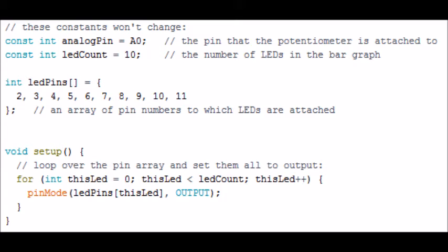And then we are starting a void setup. What we need to do is we're going to loop over the pin array and set them all to outputs. So what we're doing is, in this first line of code, it says for int thisLed equals 0. We have just declared a new variable int thisLed. We're just making a new variable inside there, thisLed, and we're saying it's equal to 0.